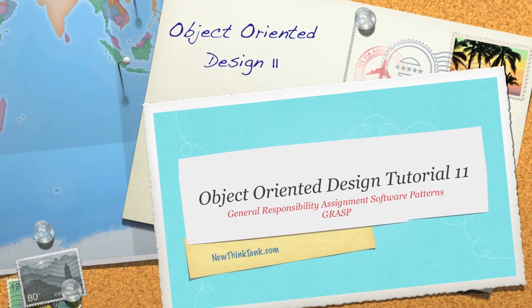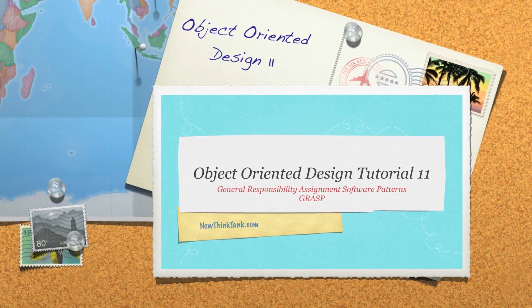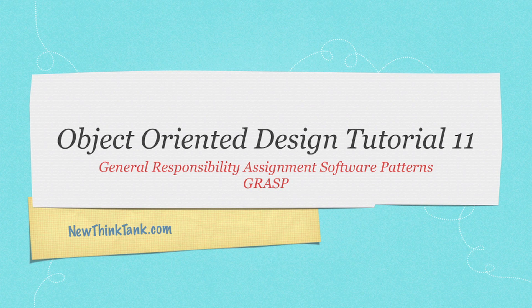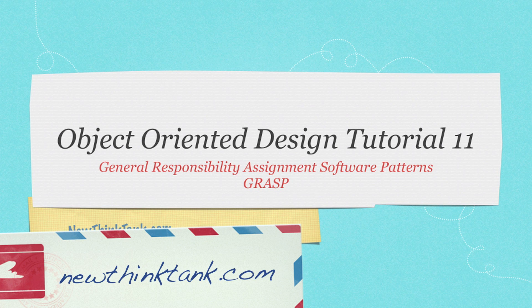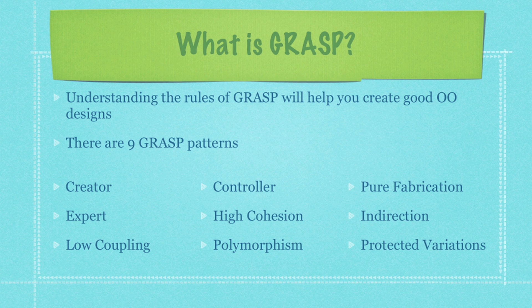Hello, Internet, and welcome to part 11 of my object-oriented design tutorial. Today I'm going to continue talking about GRASP. If you haven't seen the past tutorials, I provide a link to them above. GRASP principles are going to help you create great object-oriented designs. In the previous tutorial, I talked about creator, expert, low coupling, controller, and high cohesion. In this one, I'm going to talk about polymorphism and get into new subjects like pure fabrication, indirection, and protected variations. Don't worry, it's not as complicated as it sounds. I'll provide code examples as well as UML diagrams to help you understand.